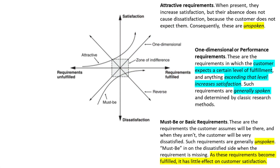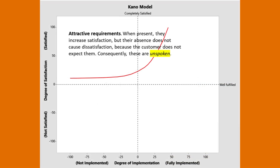Attractive requirements are those requirements that, when present, increase satisfaction, but their absence does not cause dissatisfaction. Look at the curve on the Kano model — notice how the curve increases satisfaction, but if you don't have it at all, it doesn't go below the dissatisfaction line.